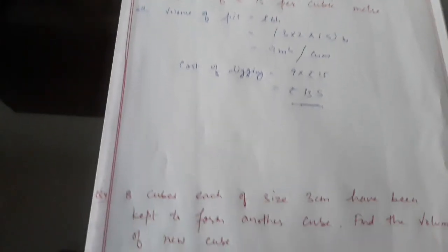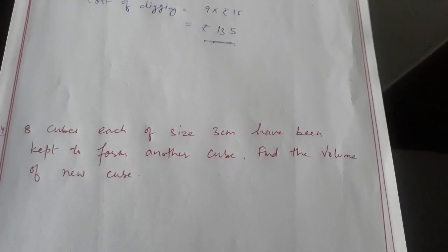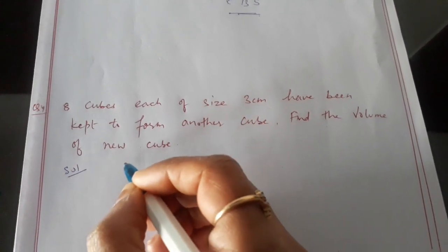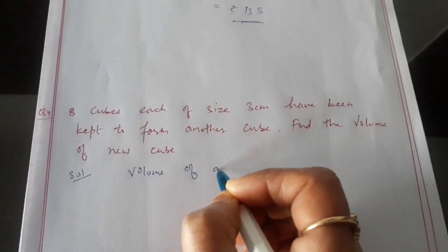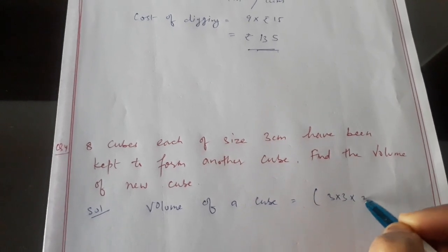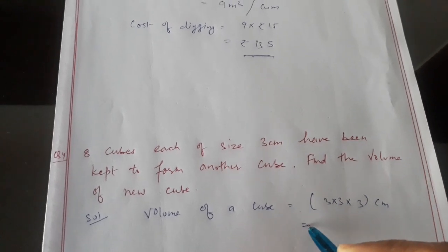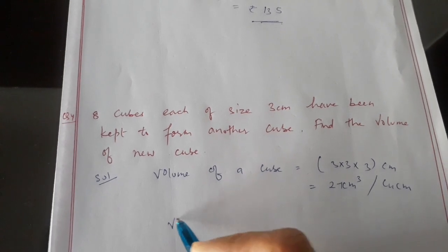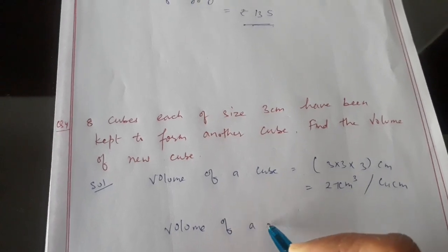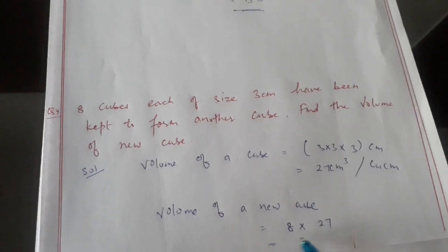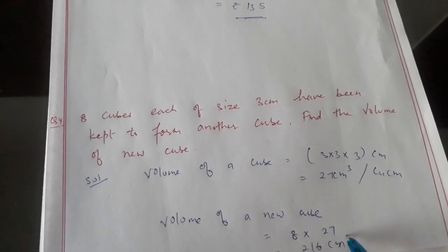Let's move to question number 4. Question number 4: 8 cubes each of size 3 centimeters have been kept to form another cube. Find the volume of the new cube. Volume of one cube is 3 into 3 into 3 centimeters, that is 27 cubic centimeters. Volume of the new cube will become 8 into 27, that is 216 cubic centimeters. So that was all about surface area and volume, questions 1 through 4.